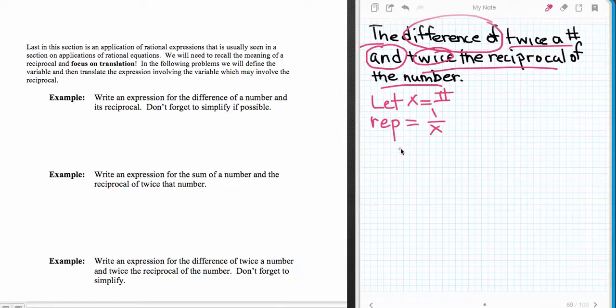The difference of twice a number - so 2 times x is how twice a number simplifies - and the difference of that and twice the reciprocal. Now it's 2 times this reciprocal, so this looks like 2 times 1 over x or 2 over x, which is different than that last example. Now we have to build the higher terms, so I'll put this over 1, then multiply this times x and this times x. That's going to give us 2x squared minus 2 all over x.